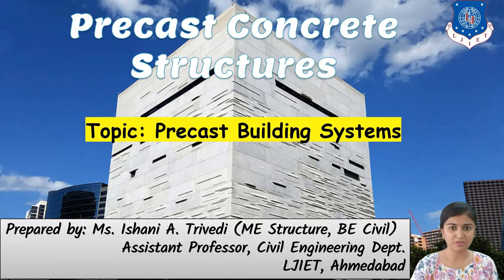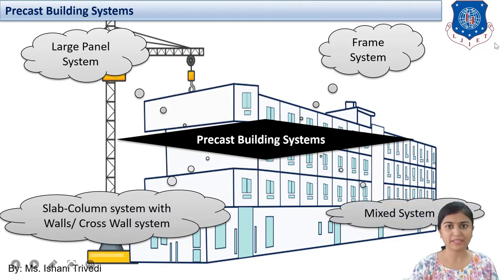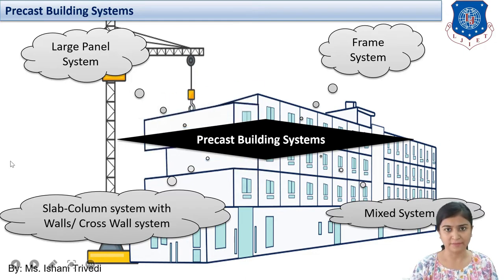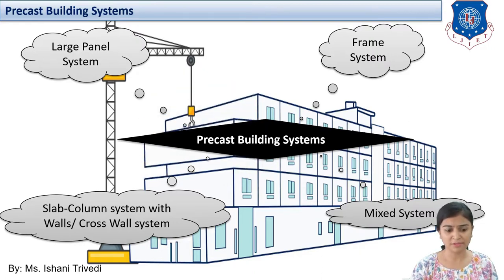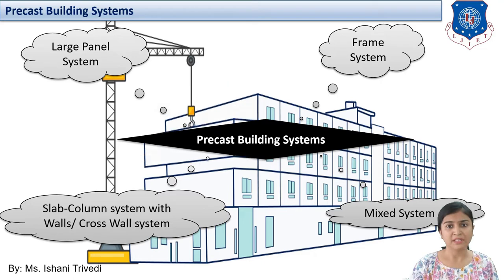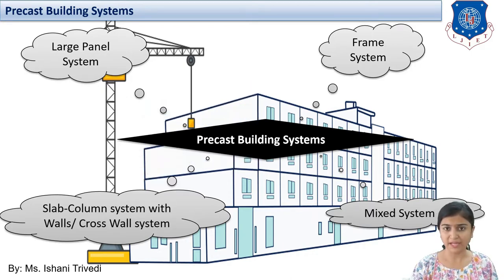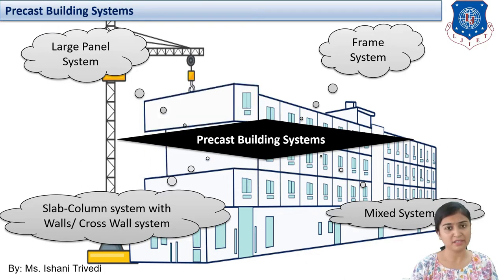We already know that you can have frame structure, you can have composite structures. Let us categorize it in the precast building system. The first one is the large panel system. The second is the frame system. The third is slab column system with walls or cross wall system. The fourth is a mixed system. The large panel system and the frame system are preferred according to our Indian standard course. You can also provide the slab column system along with the cross wall system, and together the combination will be a mixed system.